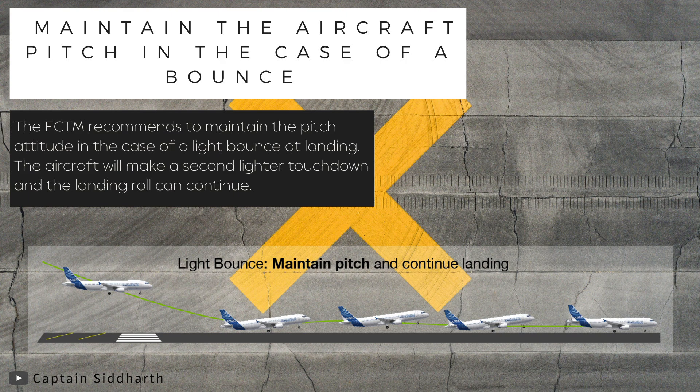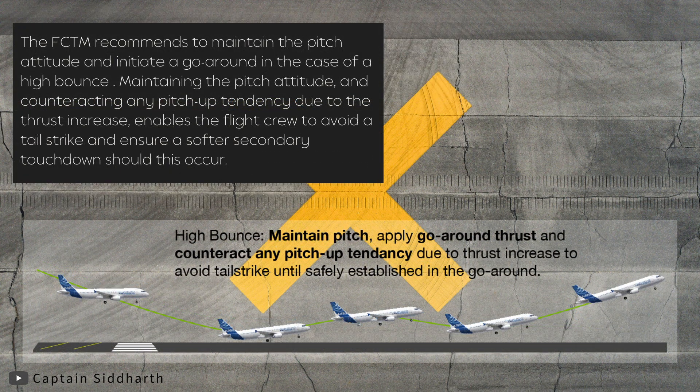Maintain the aircraft pitch in the case of a bounce. The FCTM recommends to maintain the pitch attitude in the case of a light bounce at landing; the aircraft will make a second lighter touchdown and the landing roll can continue. In the case of a high bounce, the FCTM recommends to maintain the pitch attitude and initiate a go-around, counteracting any pitch-up tendency due to the thrust increase. This enables the flight crew to avoid a tail strike and ensure a softer secondary touchdown should this occur.